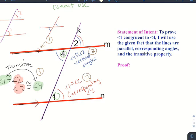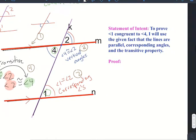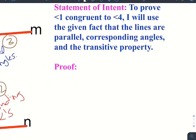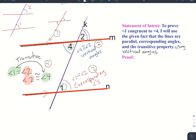Let's write that in - and the transitive property using vertical angles. Because if it's not named in our statement of intent, then we don't intend to use it in our proof, but we definitely have to use vertical angles as well.